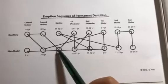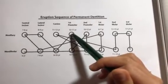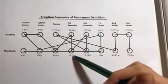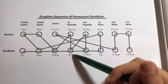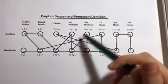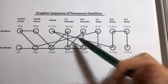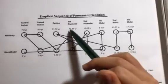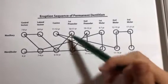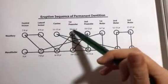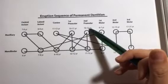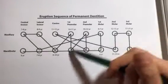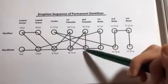Starting from the premolars it becomes 10, 11, 10, 12 — so plus one. Then 10, 12, 11, 12, 11, 12. These two pairs are the same, and it's basically counting up from ten: 10, 11, 10, 12, 10, 12, 11, 12 — plus one here, same here, then plus one here.